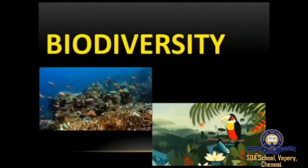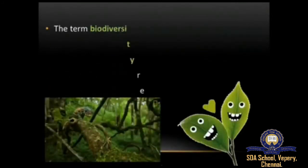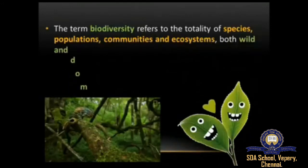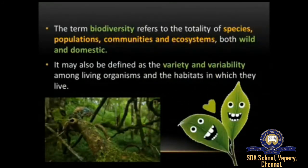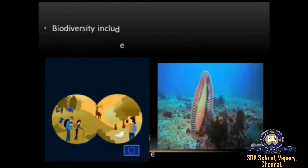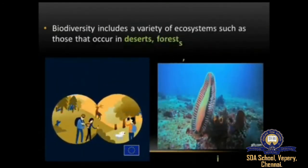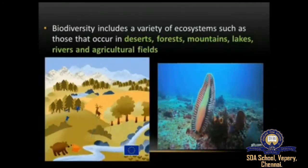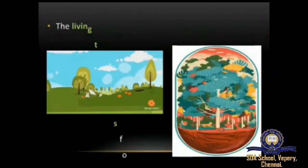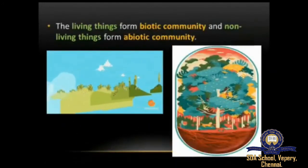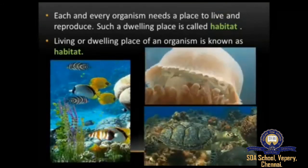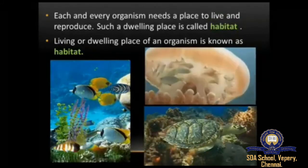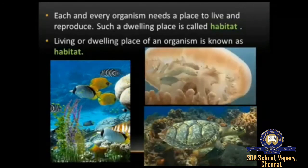In today's class, first we looked into biodiversity. Biodiversity refers to the totality of species, populations, communities, and ecosystems. It may also be defined as the variety and variability among living organisms and the habitats in which they live. Biodiversity includes a variety of ecosystems such as deserts, forests, mountains, lakes, rivers, and agricultural fields. Living things form the biotic community and non-living things form the abiotic community. Each and every organism needs a place to live and reproduce — such a dwelling place is called habitat.